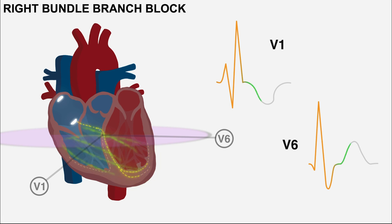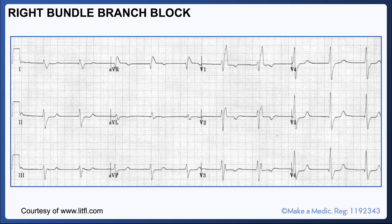Repolarization happens in a rather disorganized way in cases of bundle branch block, resulting in a phenomenon known as appropriate discordance of the T-wave. This means that in bundle branch blocks you would expect the direction of the T-wave to be opposite to the direction of the final deflection of the QRS complex. This is based on the principle that abnormal depolarization will be followed by abnormal repolarization. This is a 12-lead ECG in a patient with a right bundle branch block — you can see the broad QRS complexes and the RSR pattern in V1.